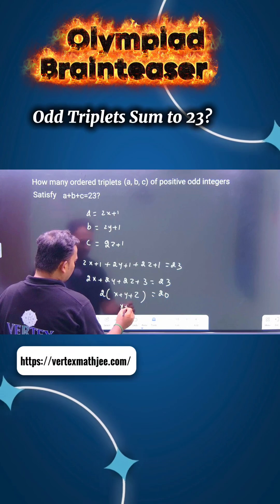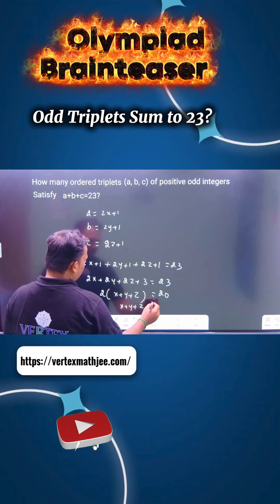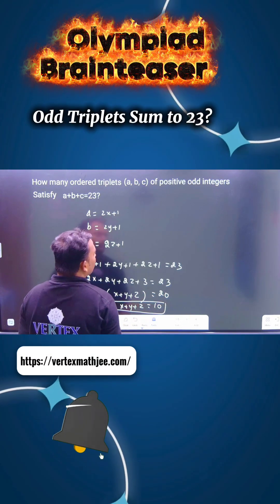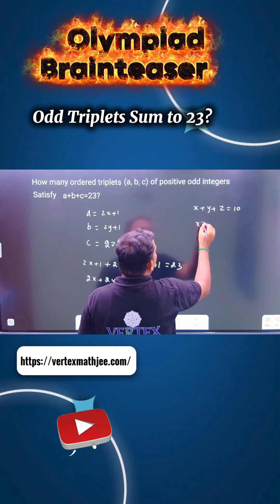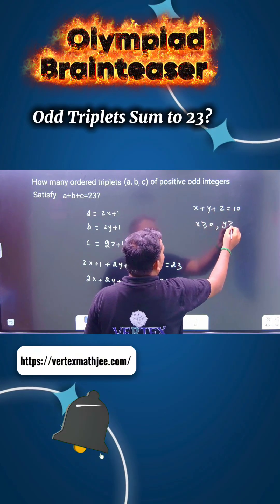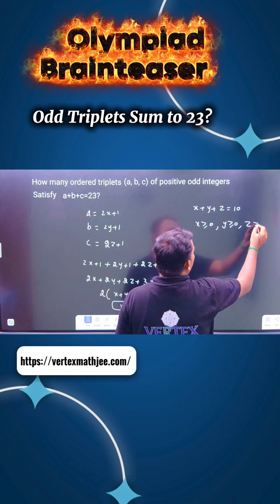So divide by 2: x plus y plus z equals 10. Now you have to remember x is greater than 0, y is greater than 0, z is also greater than 0.